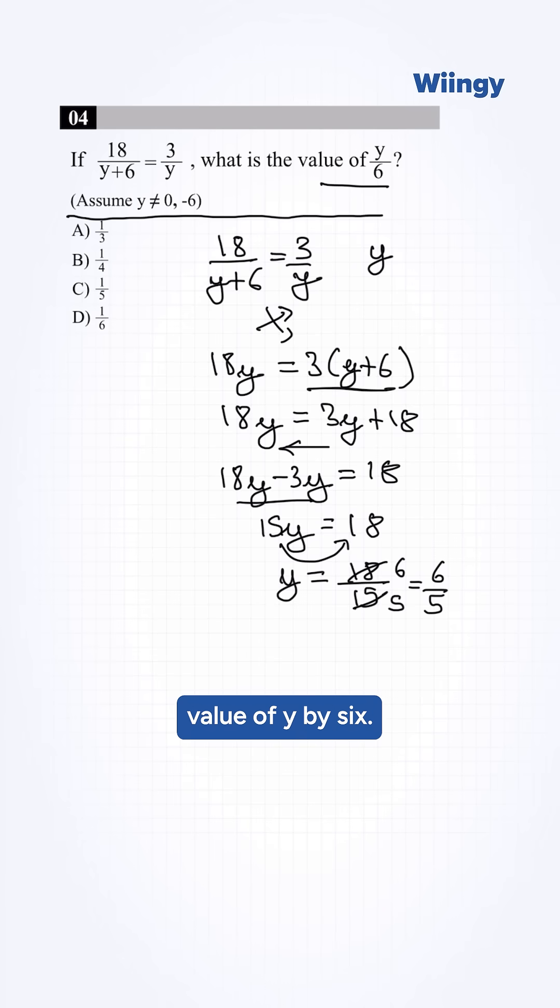But we need to find the value of y by 6, so we put y value in this. It will become y by 6: 6 by 5 upon 6.